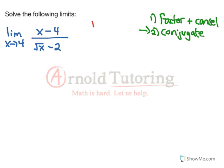Let's first ask ourselves, is there a problem? And again, that means if I sub in the value that x is going to, is the bottom going to 0. If I sub 4 in for x here, the square root of 4 is 2. Minus 2, yes, the bottom will be 0. So there is a problem.